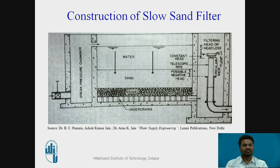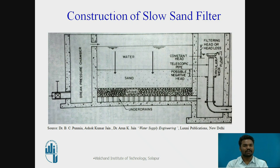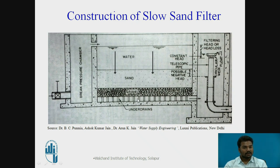This is the figure of construction of slow sand gravity filters — a cross-sectional view. The tank consists of different materials used for filtration. The figure shows five parts: first, the enclosure of the tank; second, the filter media; third, the base material; fourth, the under drainage system; and fifth, the appurtenances.